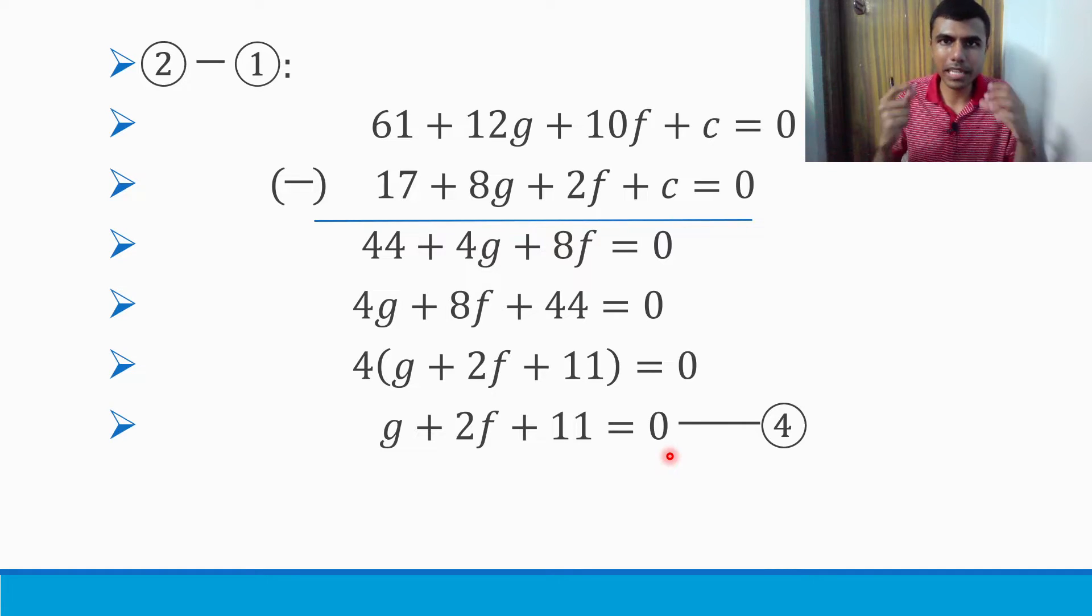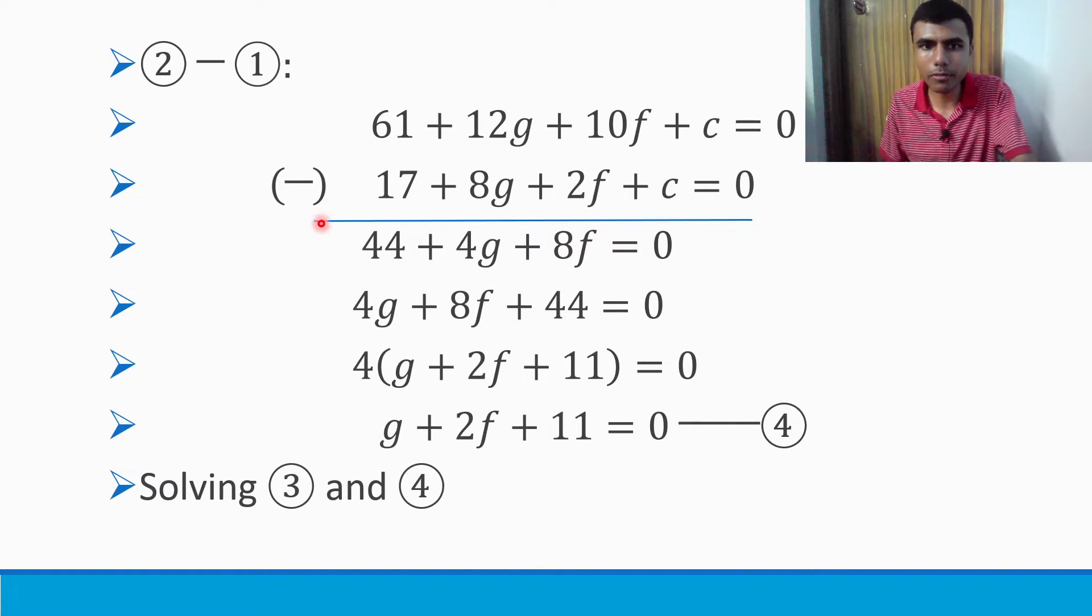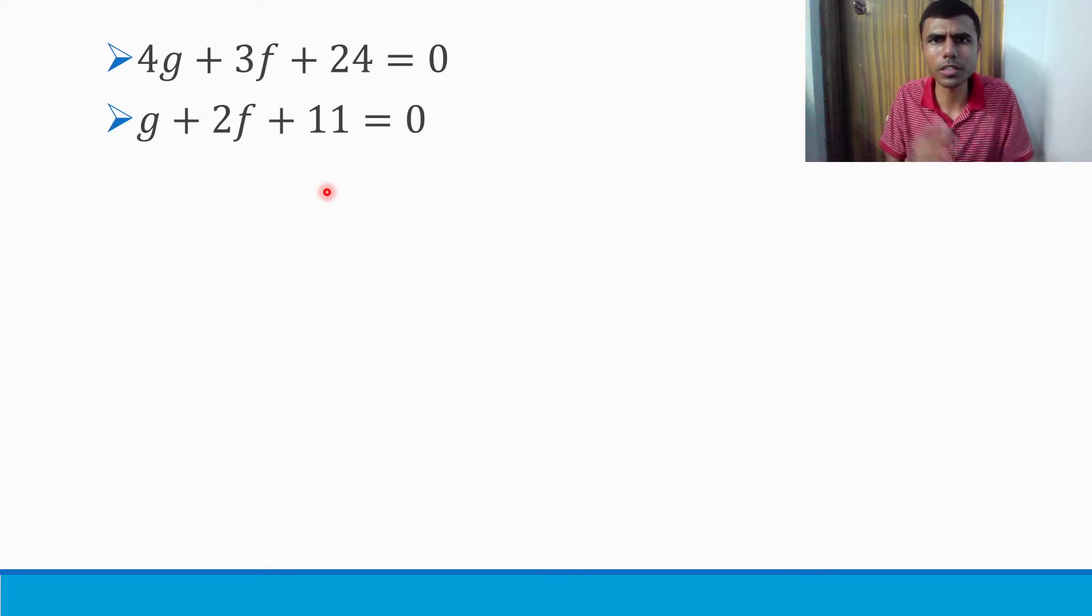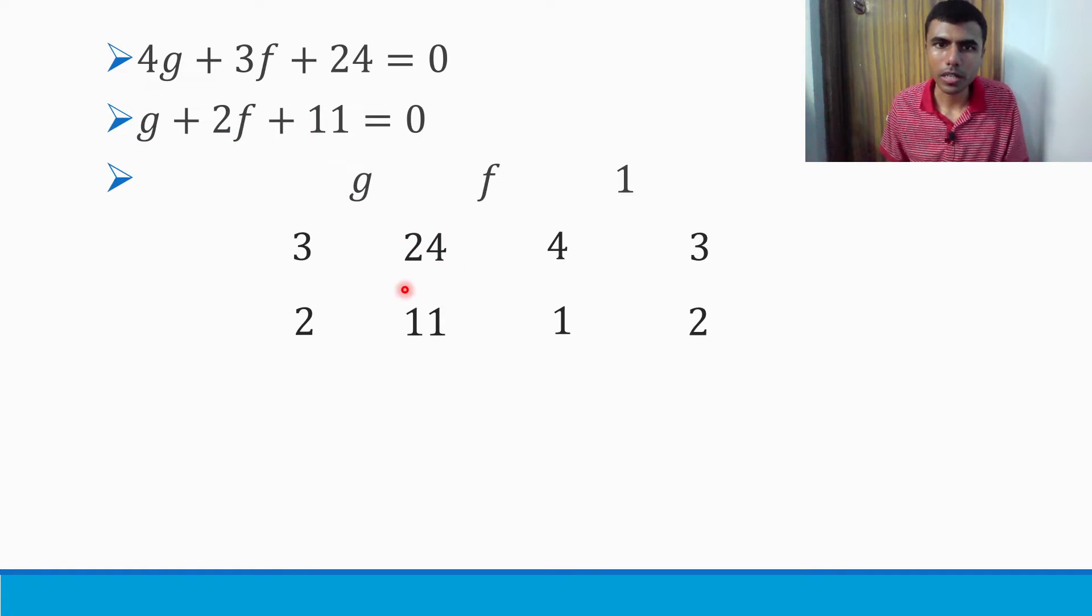I got equation 3 and equation 4. Now all that's left is to solve both of them. I'm using the cross-multiplication method. Write g, f, 1. First write the coefficient of f: 3, 24, 4, and then again 3. In the second equation, coefficient of f is 2. So 2, 11, 1, and 2 again.